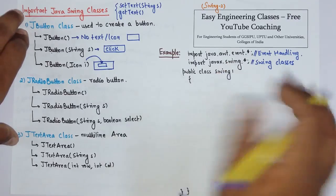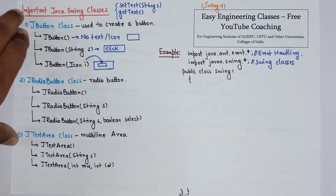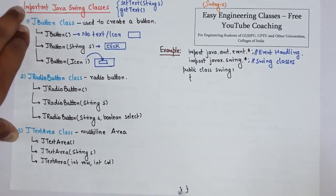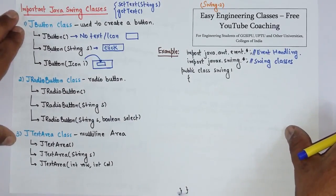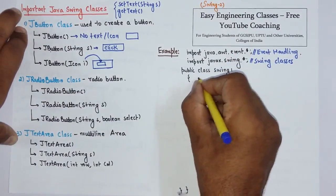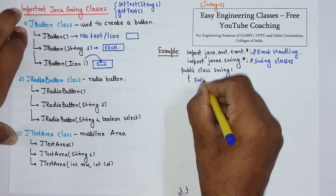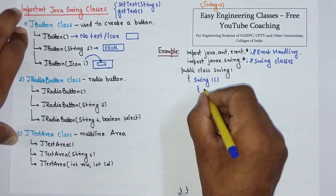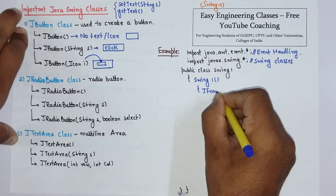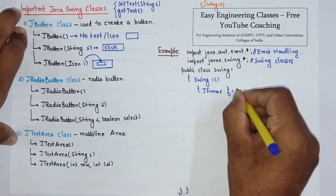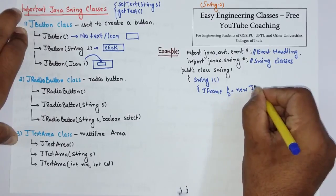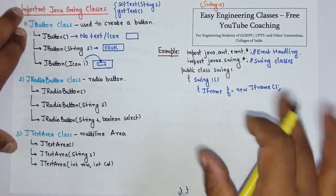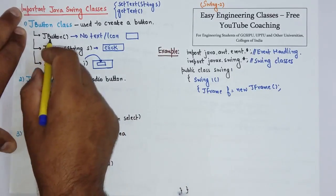It is for Swing classes. Then create one class which I have created with Swing1 name. Now let's see how you can create a simple Swing application. So I am calling it Swing1. In this constructor declare one object of JFrame class and then create an object of this JButton.